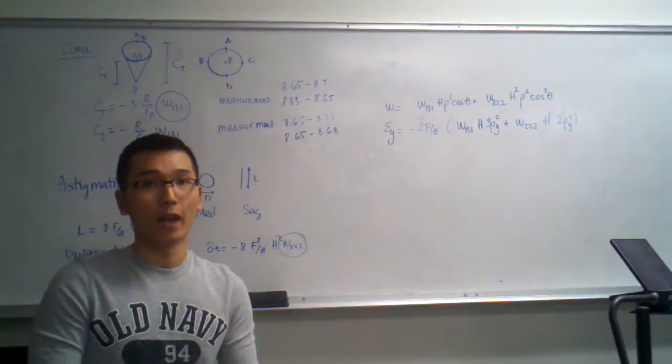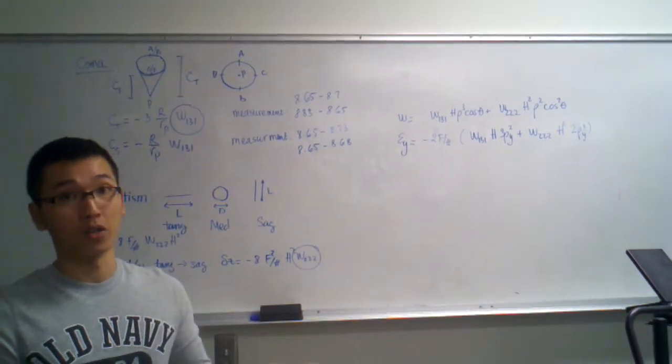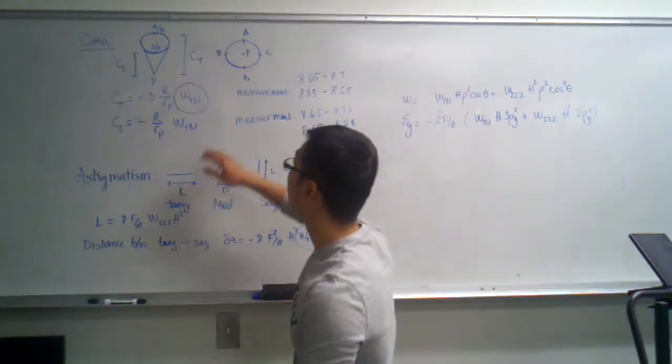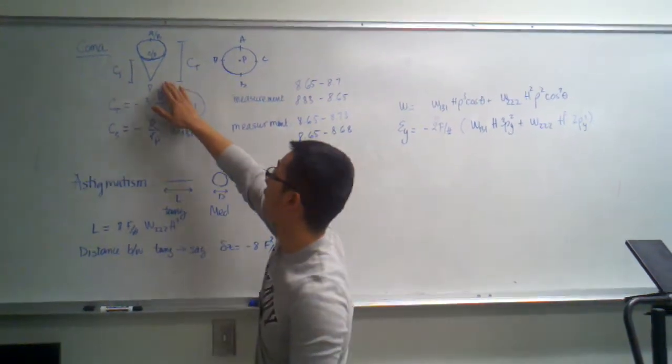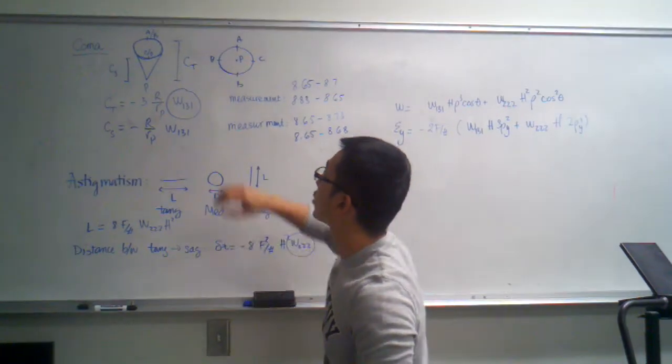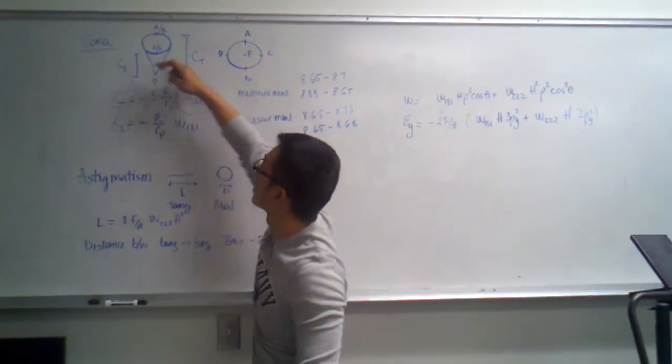Hi, I'm Fah and I'm going to discuss the results from Kevin's measurement. So here is a picture of coma, the astrium cone. So what in the lab we're measuring is the tangential coma and sagittal coma.